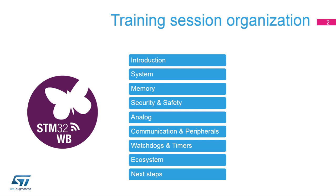You will find a technical description of all the STM32WB modules, including peripherals and development tools organized into specific sections: system, memory, security, analog, peripherals, watchdog and timers, and ecosystem. You can browse each section separately and learn about each module in the order of your choice and at your convenience.